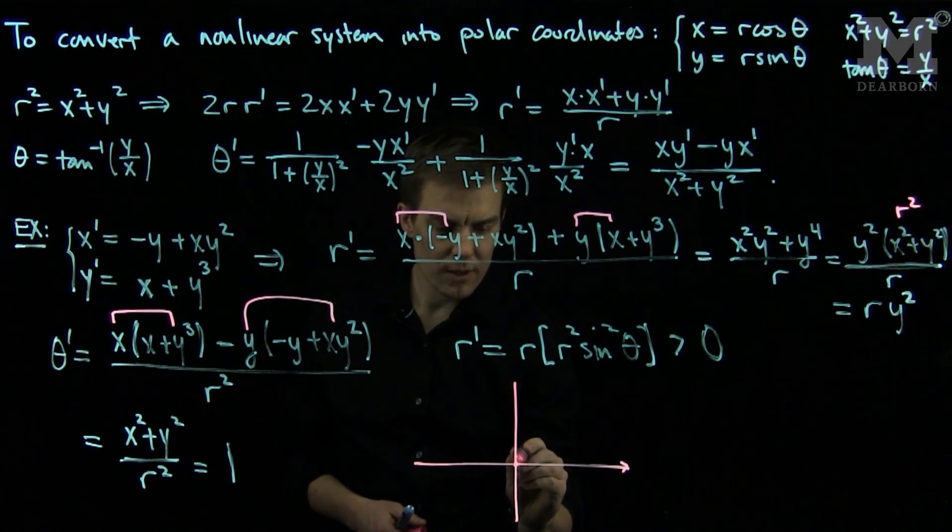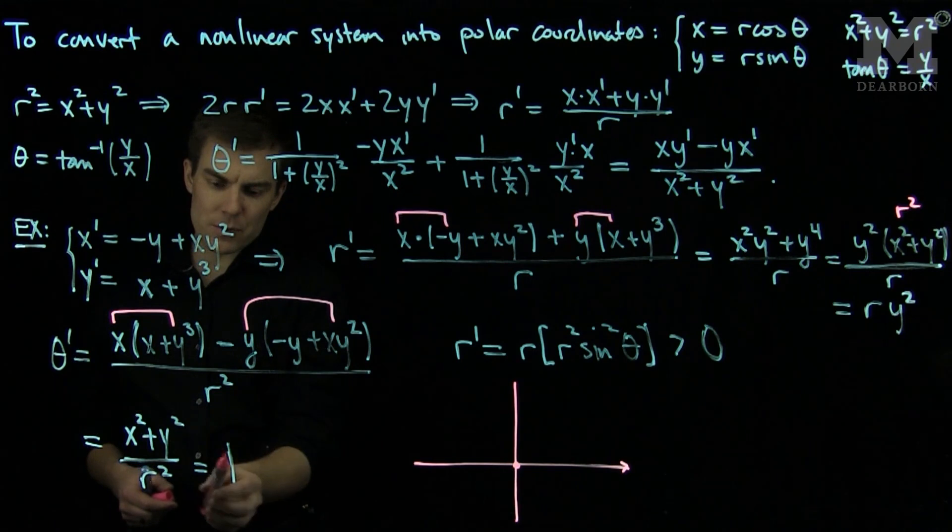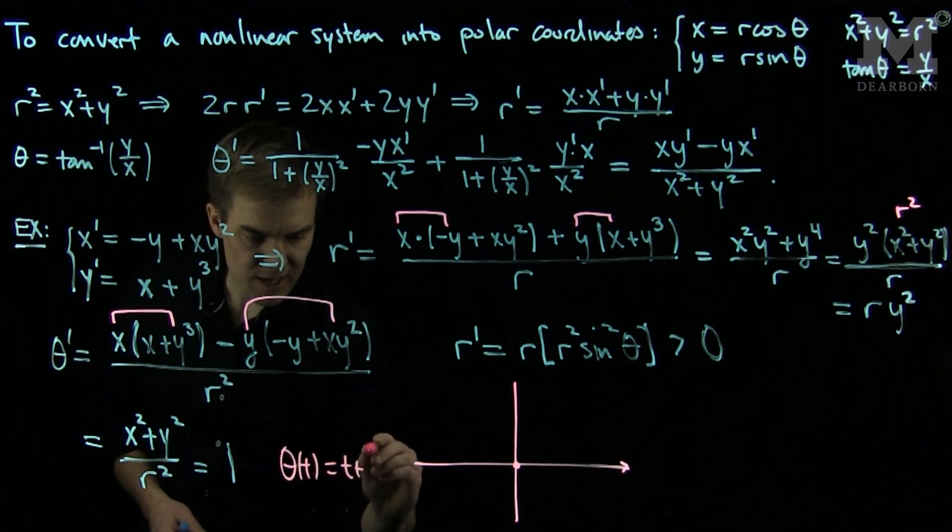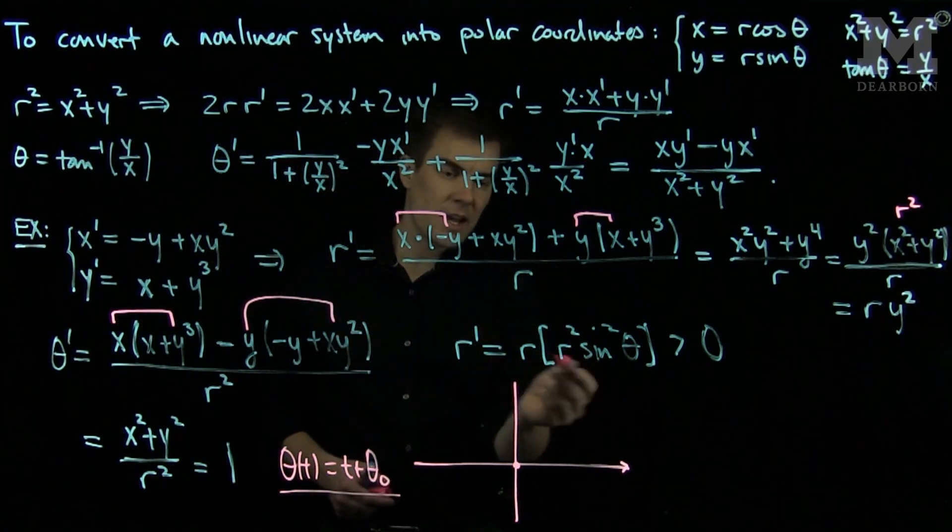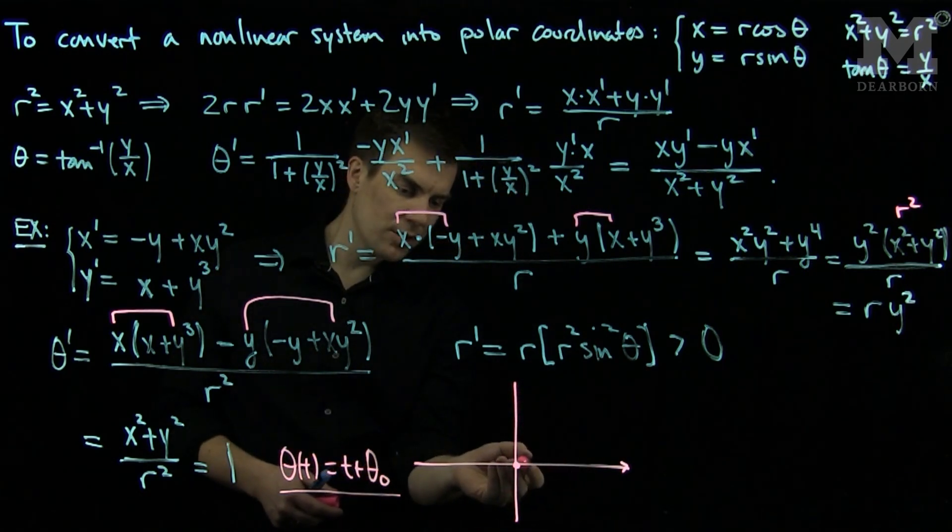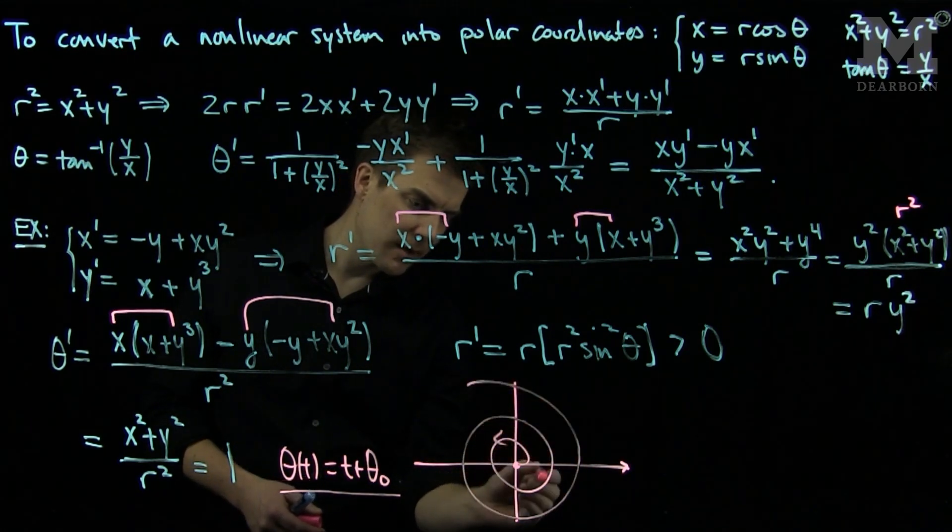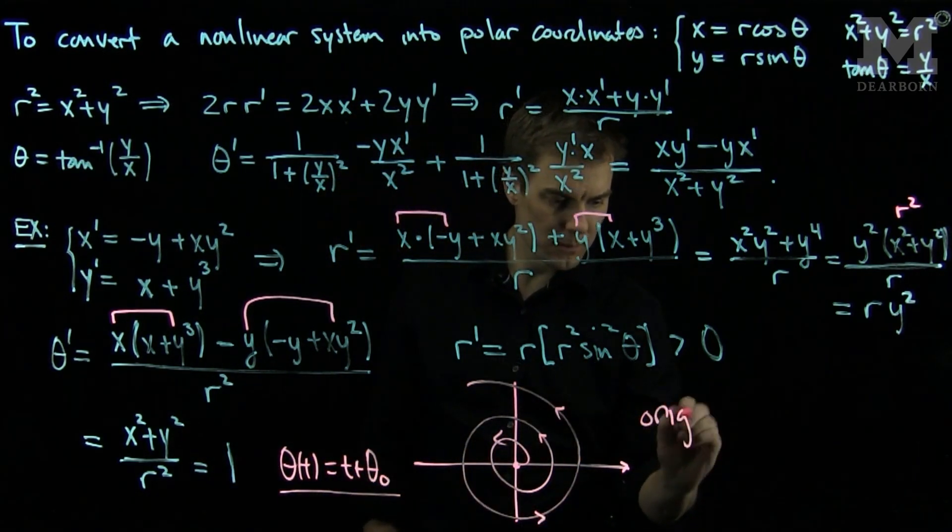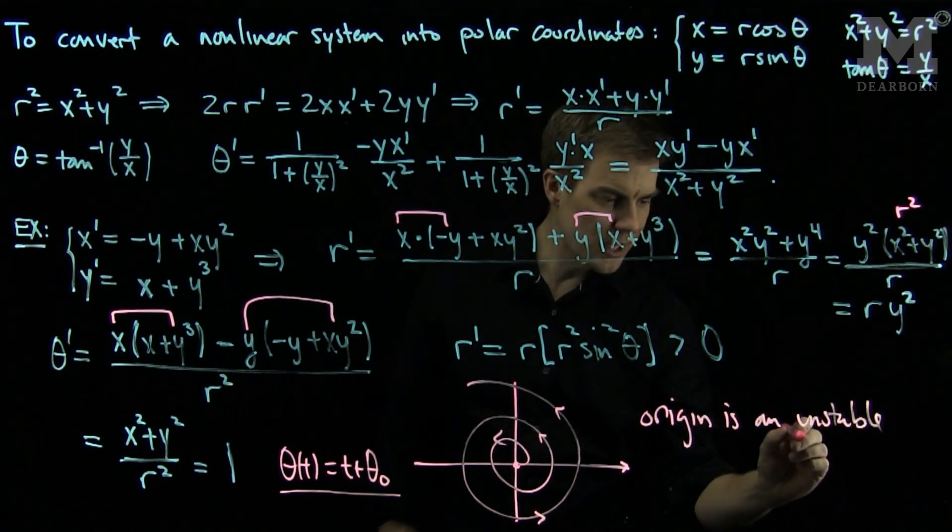This means that if we sketch our phase plane in polar form, the origin is a critical point. But as time moves on, theta prime is one, which tells me that theta of t is t plus a constant theta zero. So theta is winding, and the radial variable is always increasing, so my angular variable will change and I will spiral away from the origin. In this case, the origin is an unstable equilibrium.